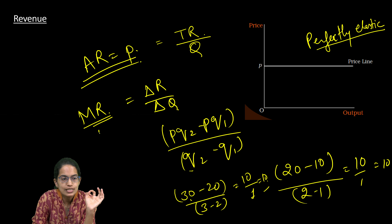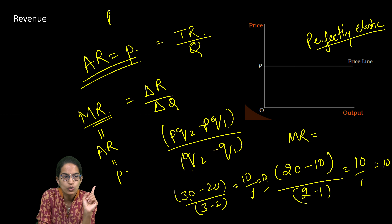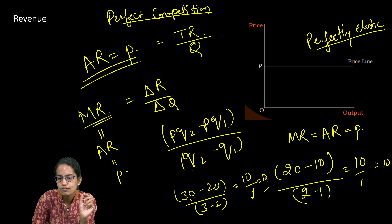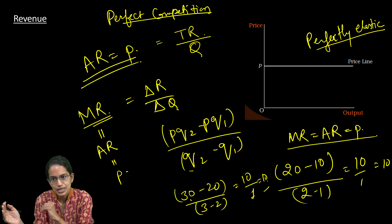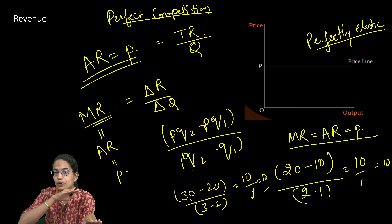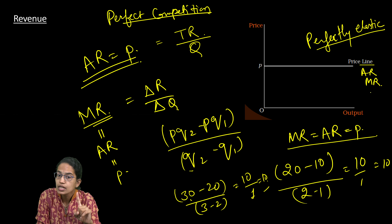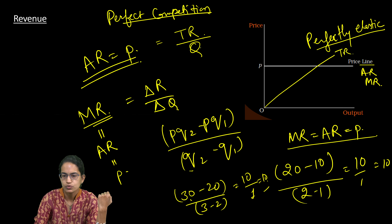In a perfectly competitive market, marginal revenue equals average revenue and both equal the price. So to summarize for perfect competition: MR = AR = Price. When the firm increases output by one unit, that extra unit is sold at the market price. Therefore, the price line is perfectly elastic — a perfect horizontal line — and it serves as the curve for both average revenue and marginal revenue.